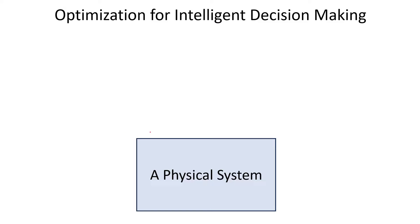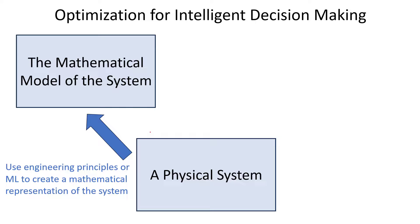Mathematical optimization is done using math. If you have a physical system you're trying to optimize, you need to build a mathematical representation of that system. You can use engineering principles or machine learning to create this mathematical representation, which gives you a model. Optimization is a set of mathematical routines designed to minimize your objective function subject to constraints using decision variables.